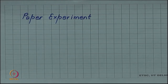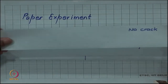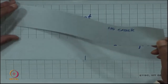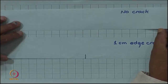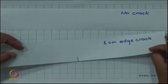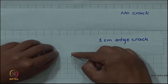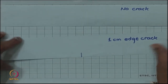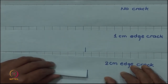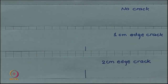I have made three specimens out of paper for testing. These are rectangular strips made of the same paper on which I am writing. All of them are of the same size. One has no crack introduced. In another, there is a 1 centimeter edge crack. And there is a third specimen in which the length of the crack is 2 centimeters. These three specimens I will test one by one.